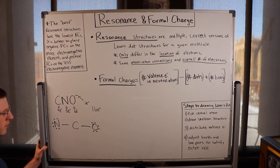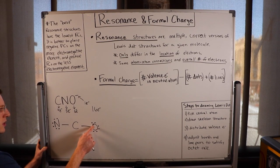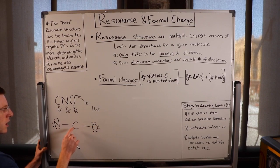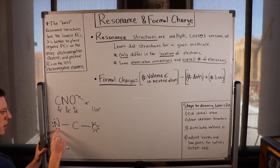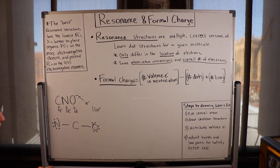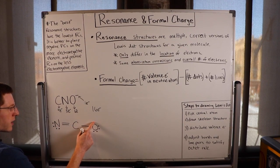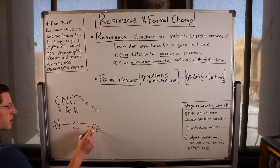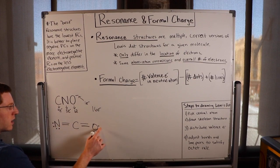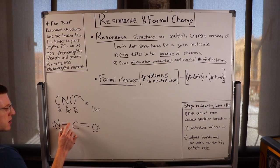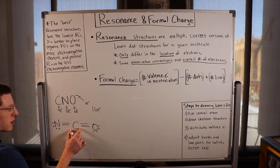I'll place these electrons on the outer atoms. Oxygen needs 8 electrons, so I'll put 6 here since it already has 2 from the bond — its octet is satisfied. I'll also put electrons on nitrogen. After distributing all 16 electrons, I check whether every atom has a satisfied octet. Oxygen is happy with 8. Carbon only has 4 electrons and wants 8. Nitrogen has 8 and is happy. So I'll take a lone pair from each neighbor and make double bonds — now carbon has 8 electrons. This is a valid Lewis dot structure.